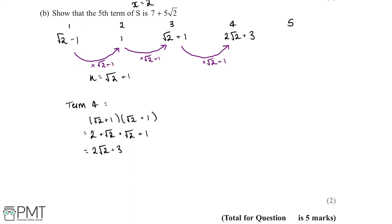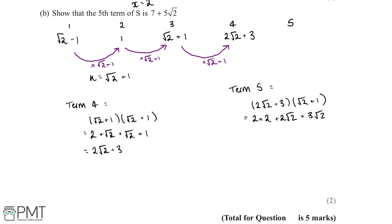To get from term 4 to term 5, we multiply term 4 by the common ratio: term 5 = (2√2 + 3)(√2 + 1). Expanding: 2√2 × √2 = 4, 2√2 × 1 = 2√2, 3 × √2 = 3√2, and 3 × 1 = 3. Combining: 4 + 3 = 7 and 2√2 + 3√2 = 5√2, giving 7 + 5√2, which is the fifth term we were asked to prove.